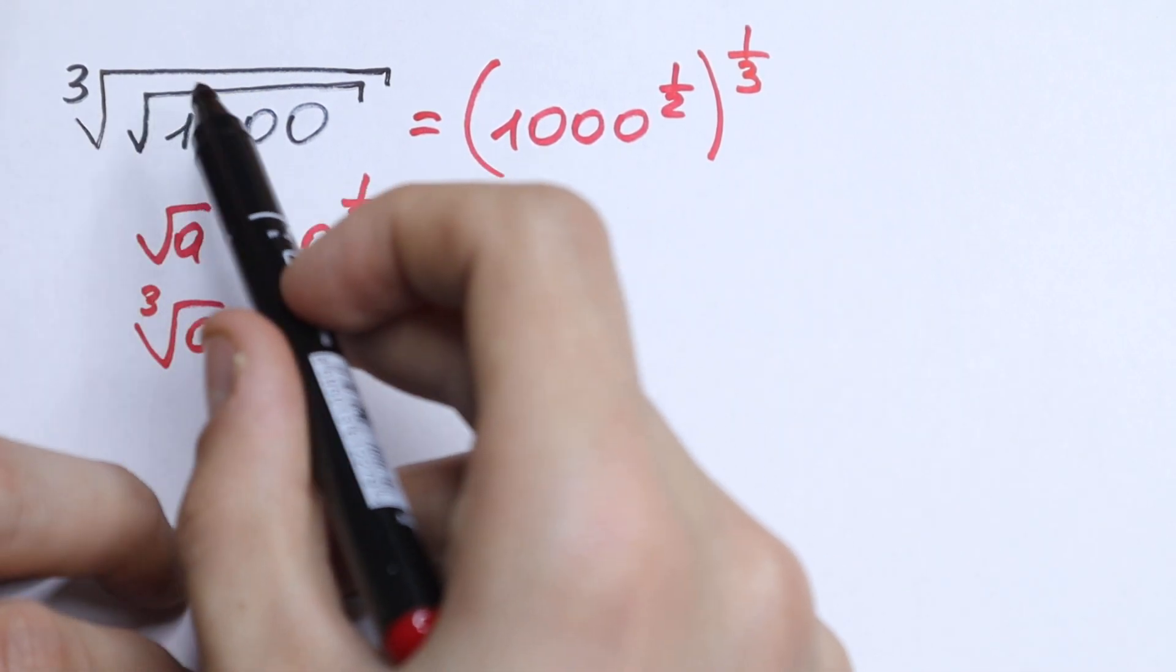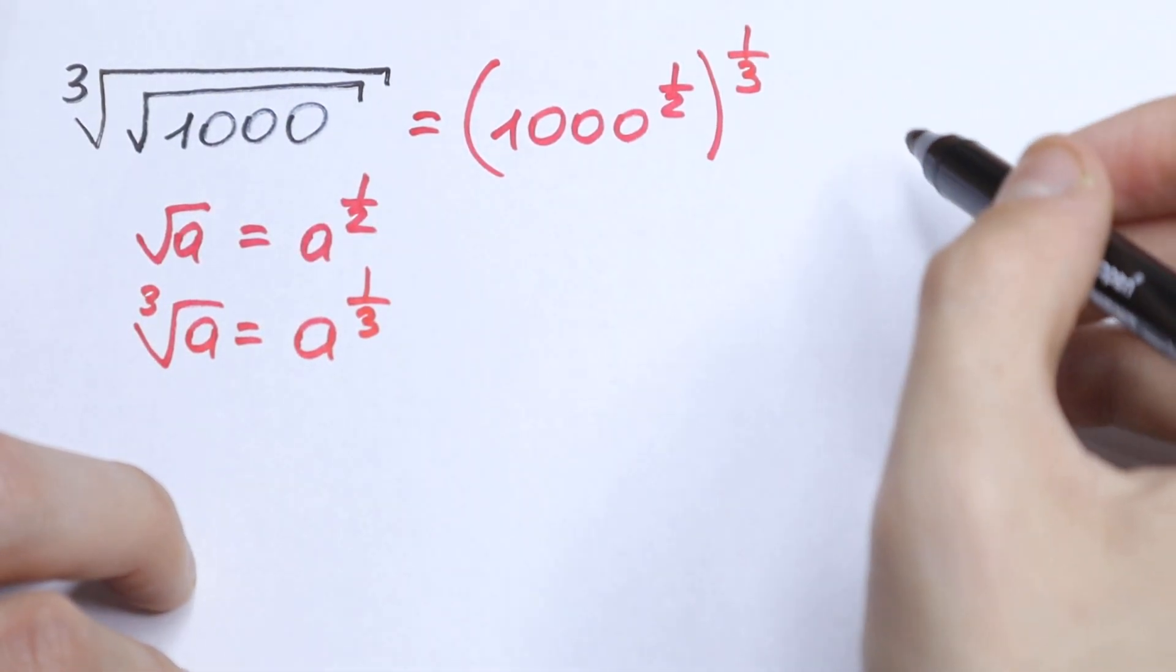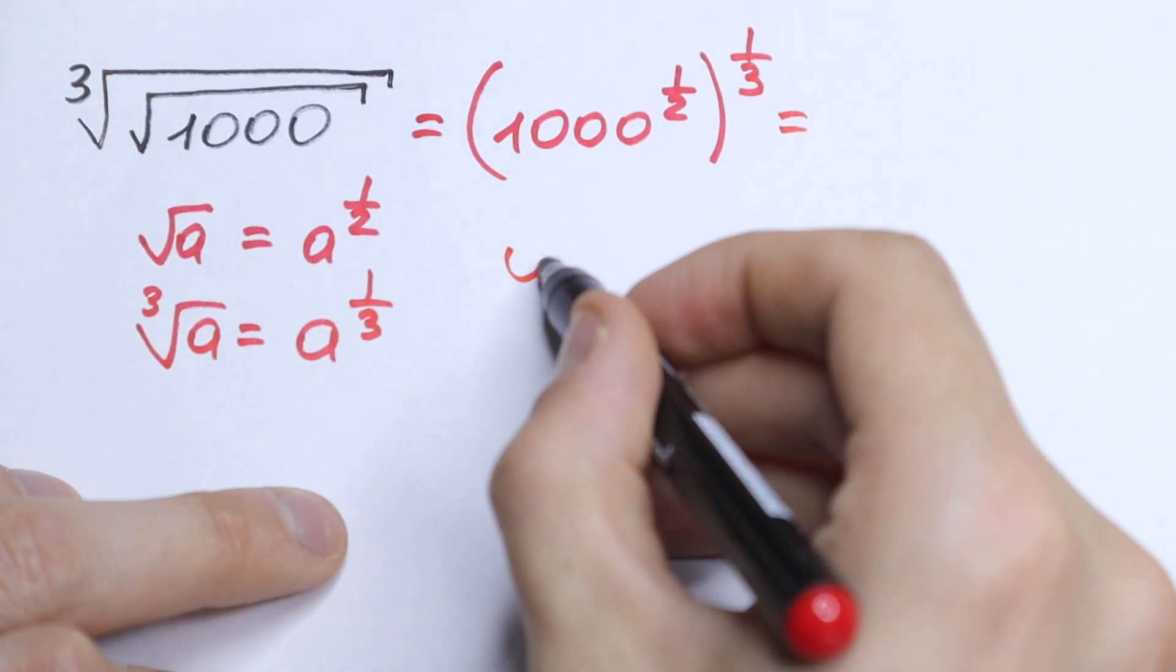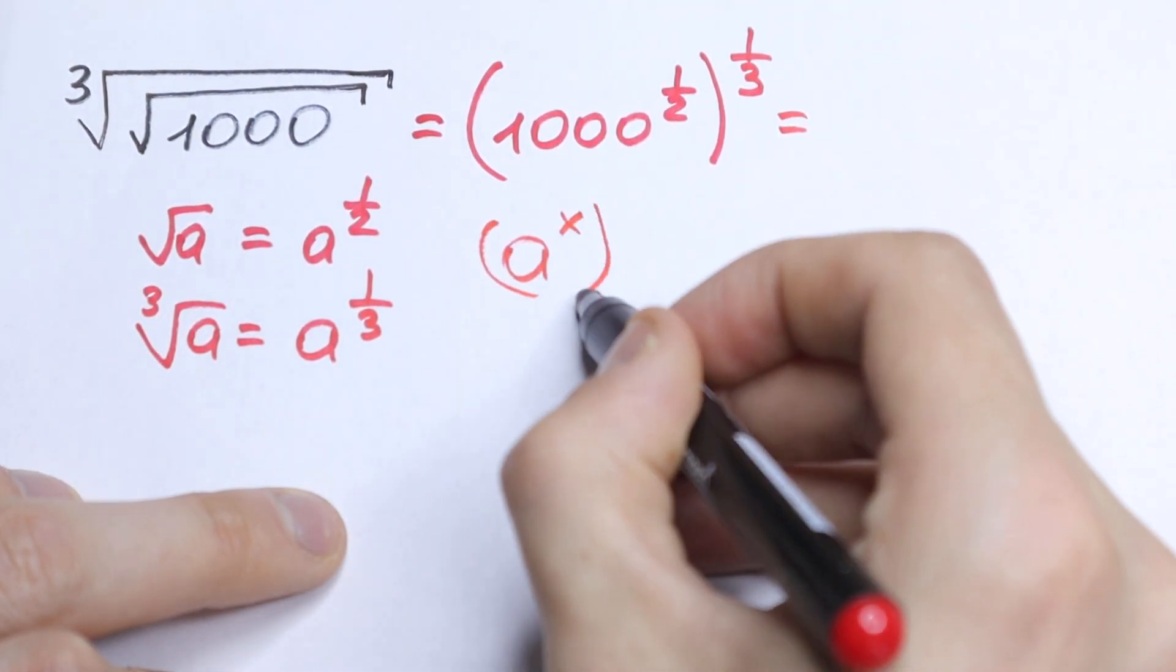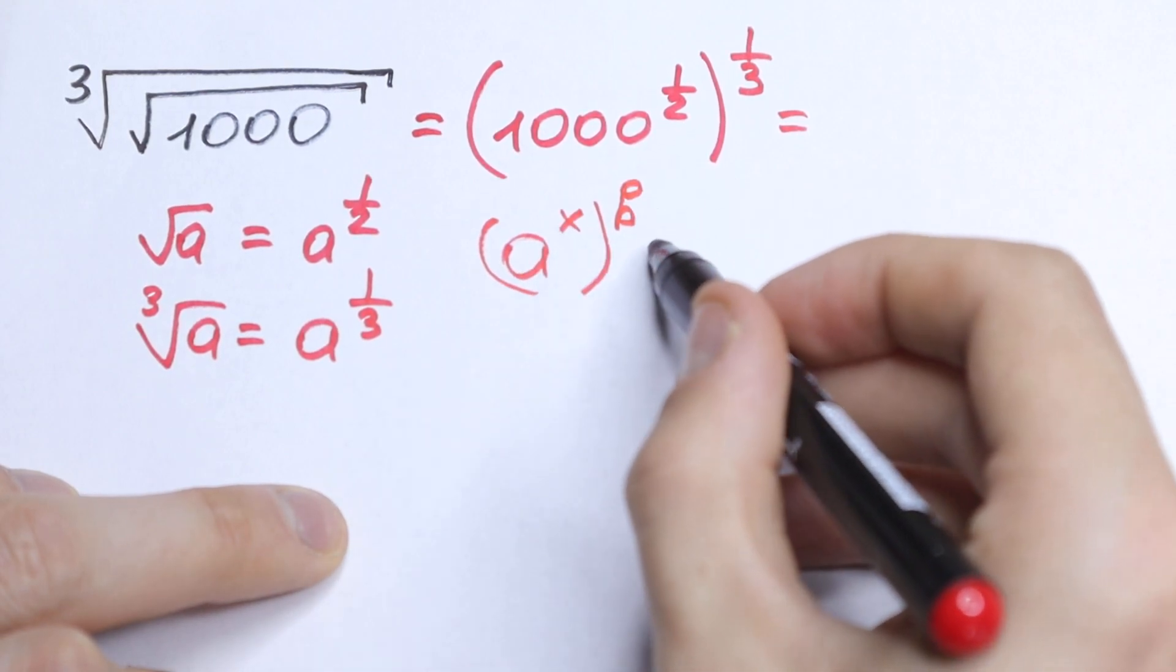So we just rewrite this square root sign as a power. What we're going to do next? We need to know that if we have a to the power x raised to the power b,